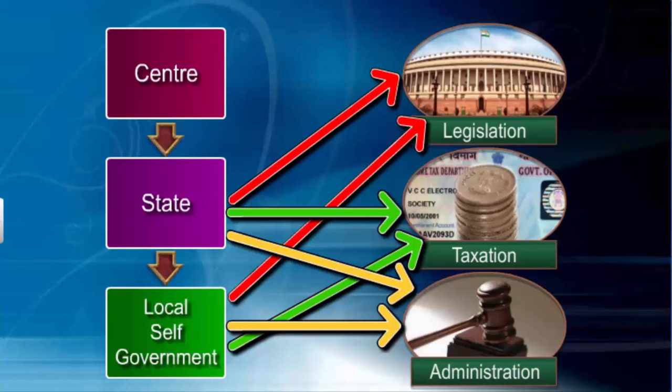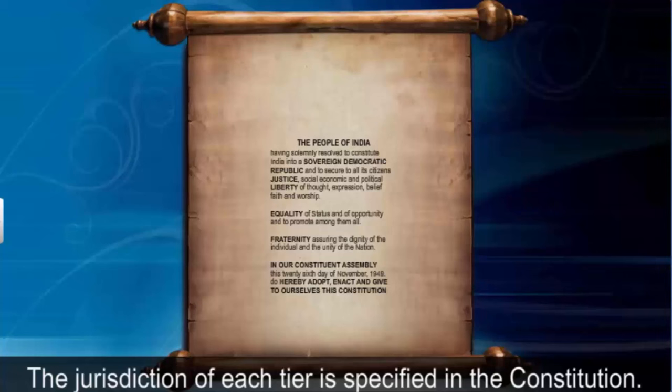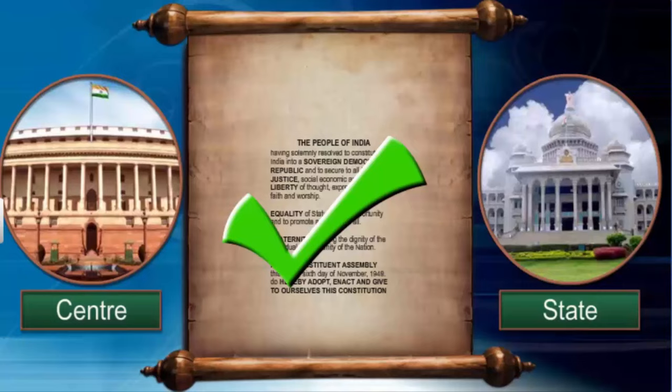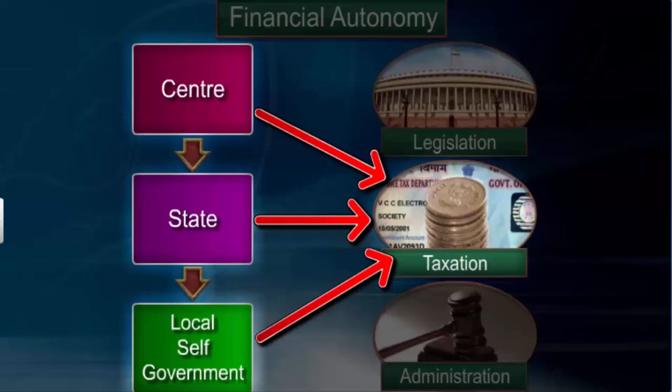Jurisdiction is the legal authority and can be defined in terms of geographical area. Federalism provides constitutional guarantees for the existence and authority of each tier of government. The basic provisions of the constitution cannot be unilaterally changed by one tier; such changes require the approval of both tiers. Every level is free to impose taxes and raise funds, though the sources of revenue for each tier are clearly specified.